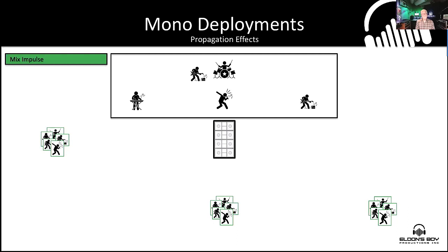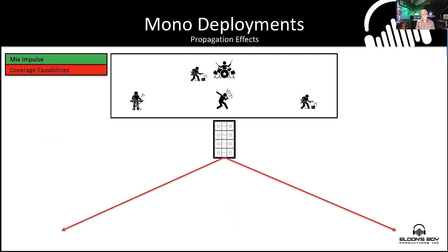Coverage capabilities in mono become pretty challenging, especially in an environment where we want to go more than 180 degrees. If we need to get to 270 degrees, there are real challenges — not least the fact that we're going to create a lot of spill on the stage, which can cause havoc. Coverage capabilities in the large-scale environments we're talking about is a challenge for mono — meaning a single speaker cluster model.